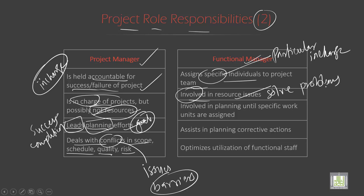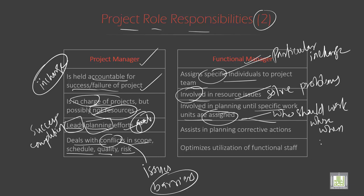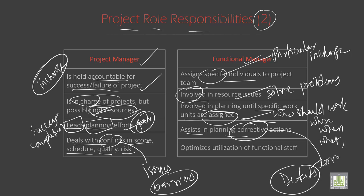He is involved in planning until specific work units are assigned — determining who should work, what they should do, where, and when. All of this is done by the functional manager. He assists in planning and corrective actions: if there are any defects or problems, he goes for the correction.